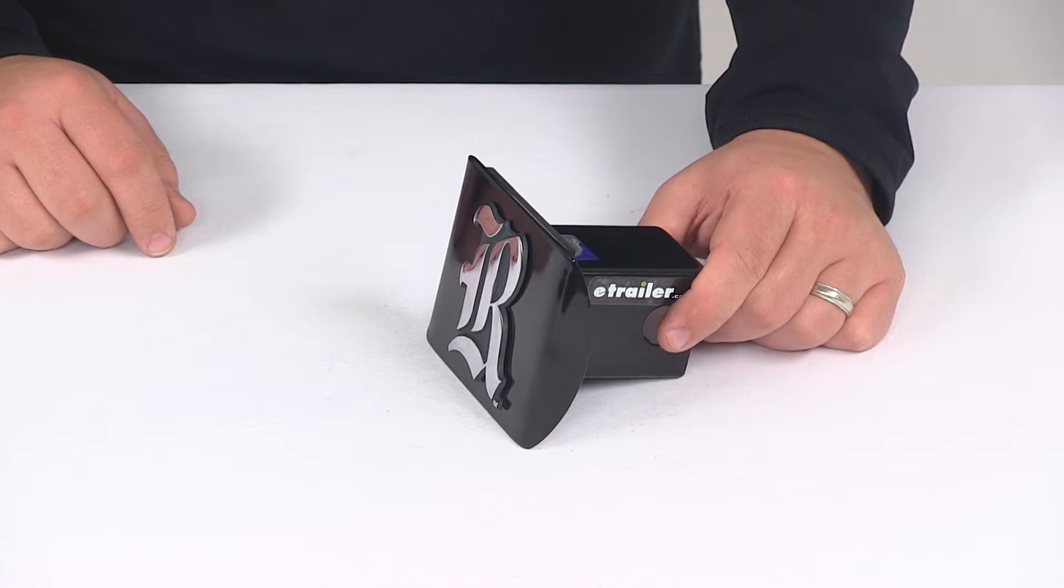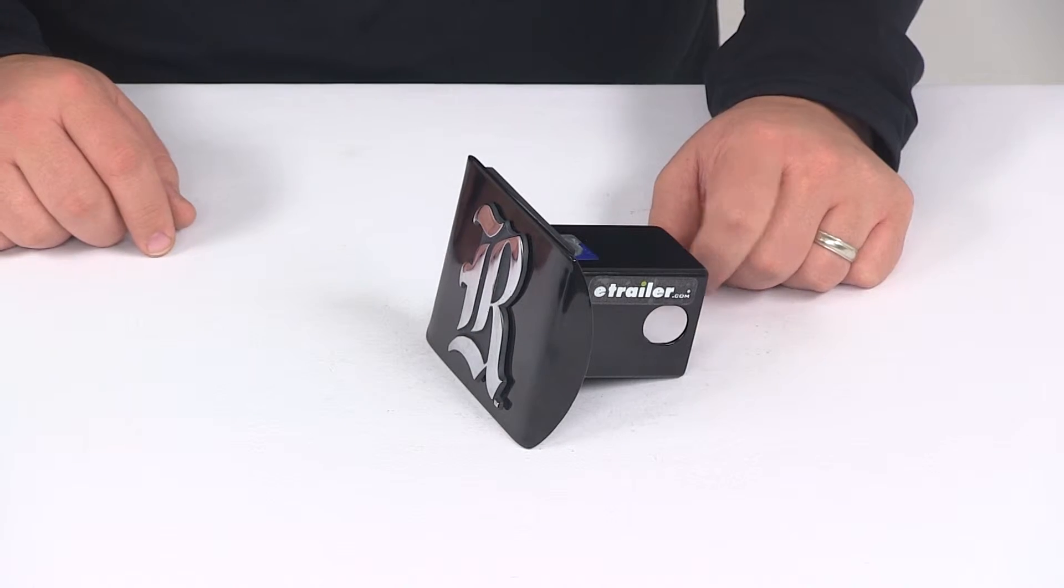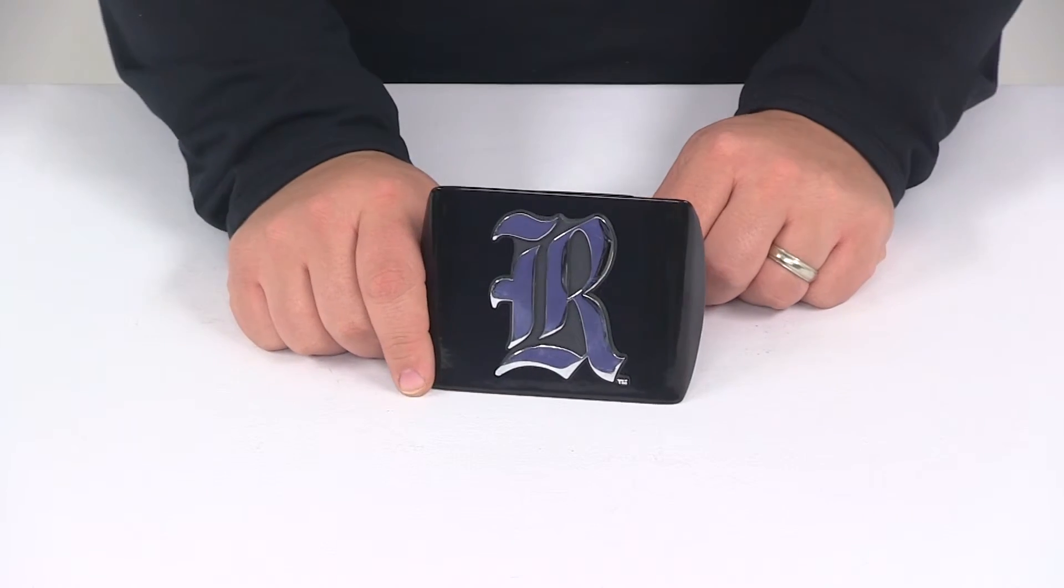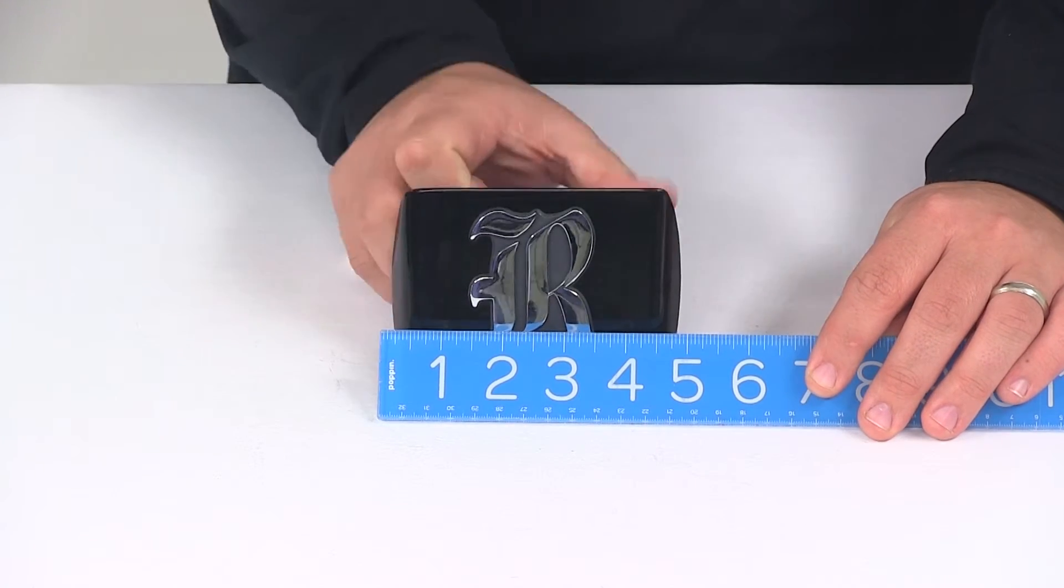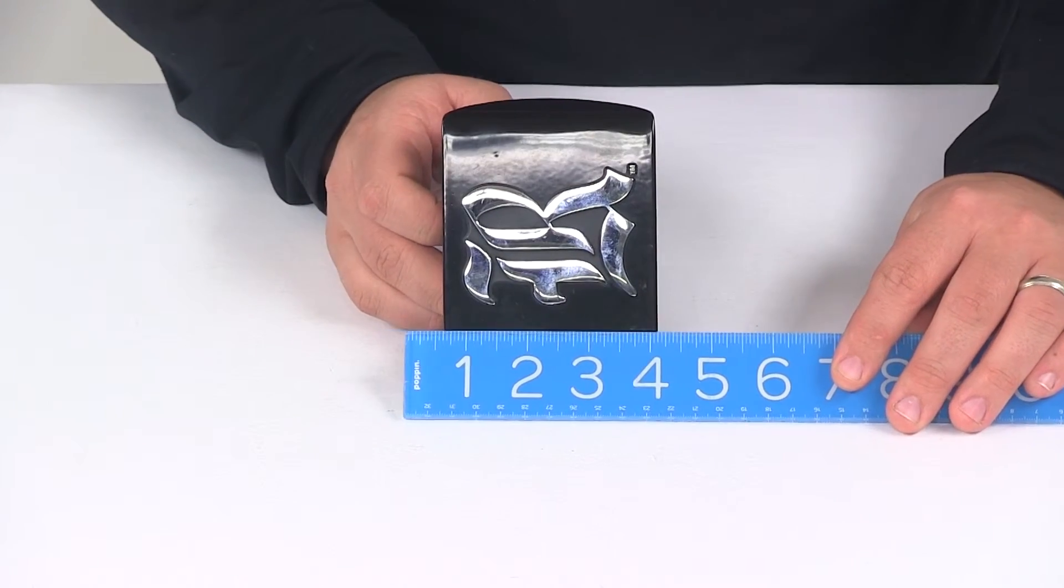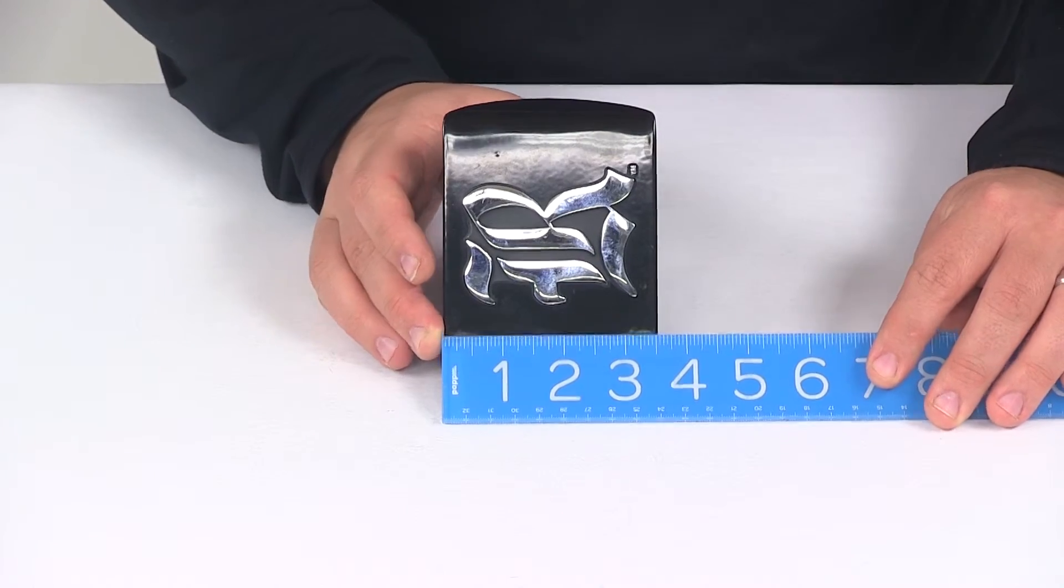The pin holes on the hitch cover will accept a standard 5/8 inch diameter pin. Now when it comes to the hitch cover face dimensions, we're looking at an overall width of about 5 inches with an overall height of 3 1/2 inches.